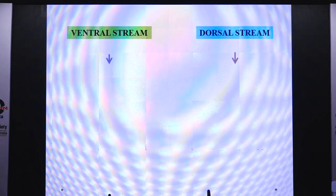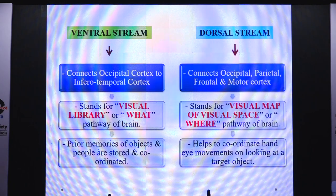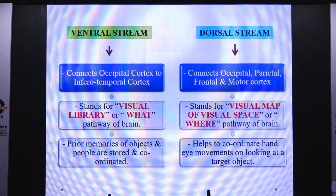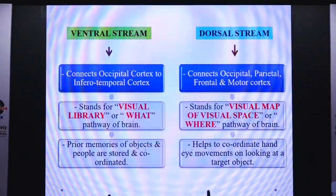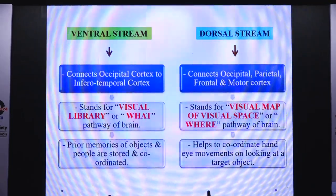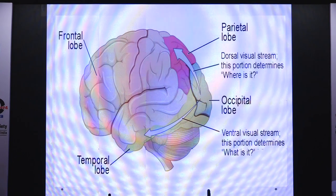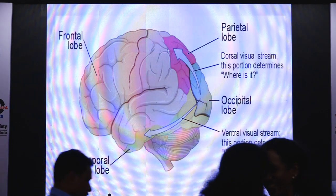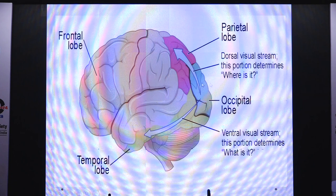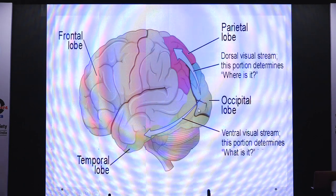The ventral stream connects the occipital cortex to the inferotemporal cortex. It represents the visual library or 'what' pathway of the brain, where prior memories of objects and people are stored and coordinated. The dorsal stream connects the occipital, parietal, frontal, and motor cortex. It represents the visual map or 'where' pathway of the brain, and helps coordinate hand-eye movements when looking at a target object. This is the dorsal stream connecting occipital lobe to parietal lobe to frontal lobe and motor cortex, while the ventral pathway connects the occipital and temporal lobes — where memories are stored.